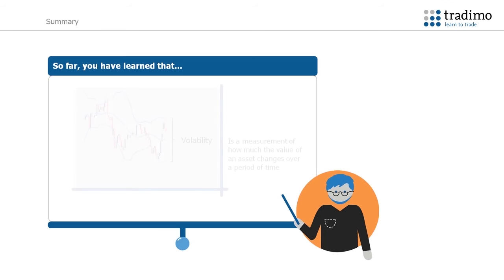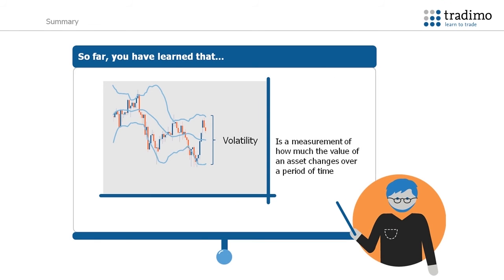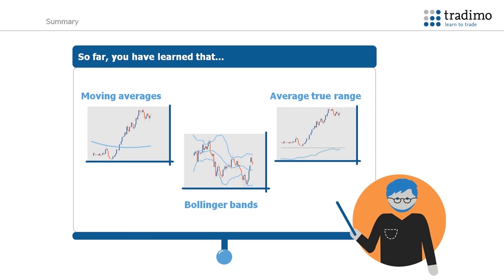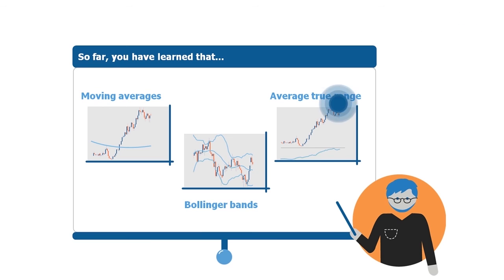So far, you have learned that volatility is simply a measurement of how much the value of an asset changes over a period of time. Therefore, the higher the volatility, the greater the profit potential for that asset. Likewise, if the asset has a low volatility, it is best to avoid trading it. We can use various indicators to tell us the volatility of an asset at any given time.